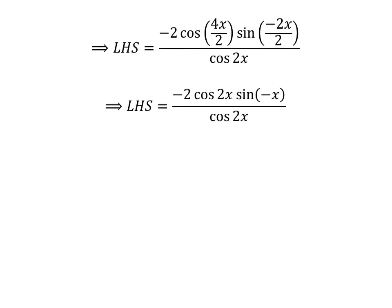Canceling out the common factor in the numerator and in the denominator gives us the left hand side of the equation is equal to minus 2 times sine of minus x.